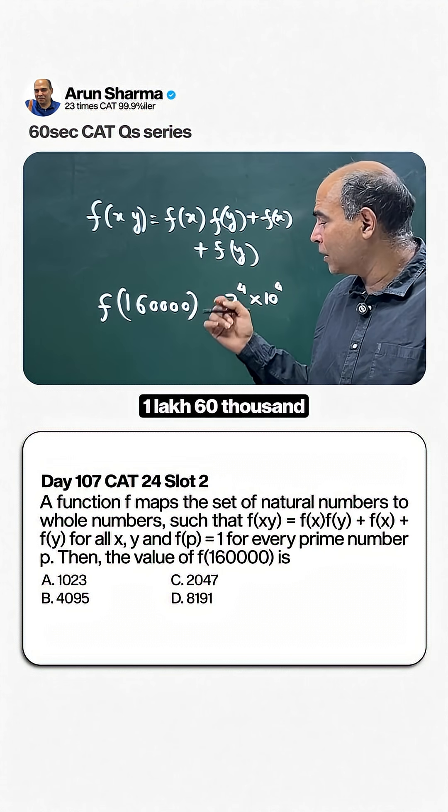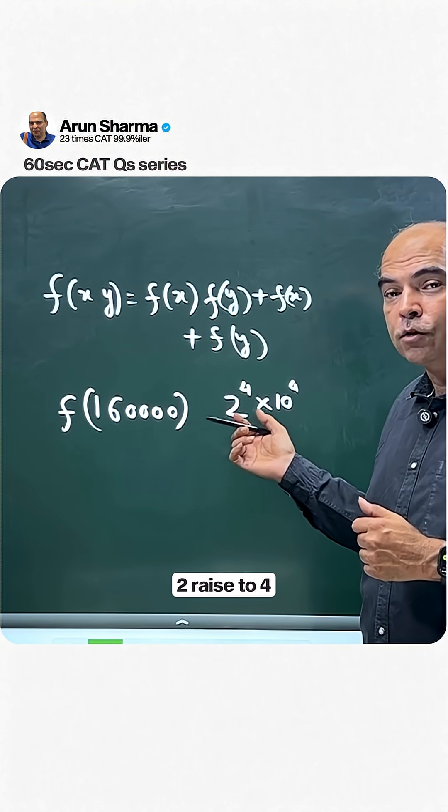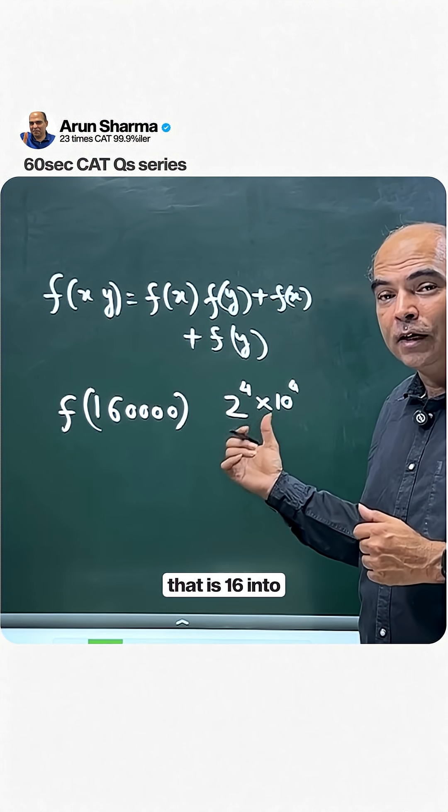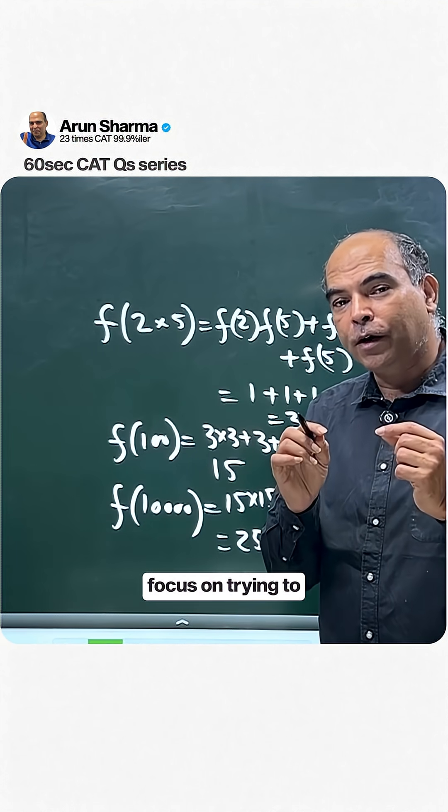The key is to understand that 160000 = 2^4 × 10^4, which is 16 × 10000. Once you recognize this, start by focusing on finding f(10000). To do that, use 2 and 5 to get f(10).